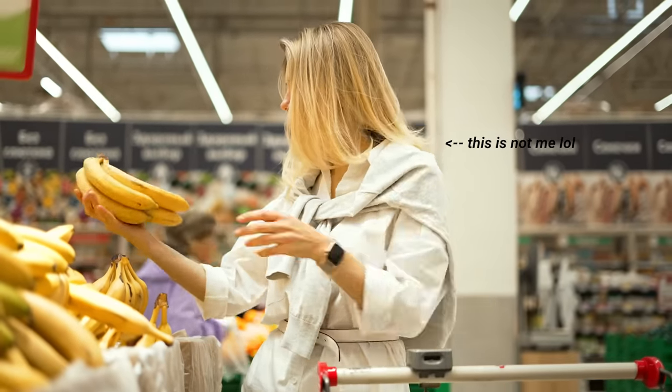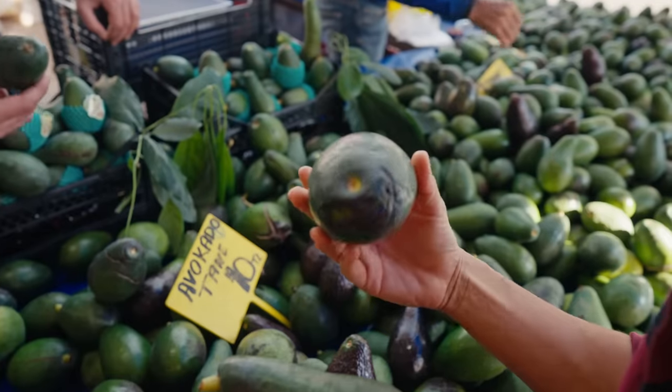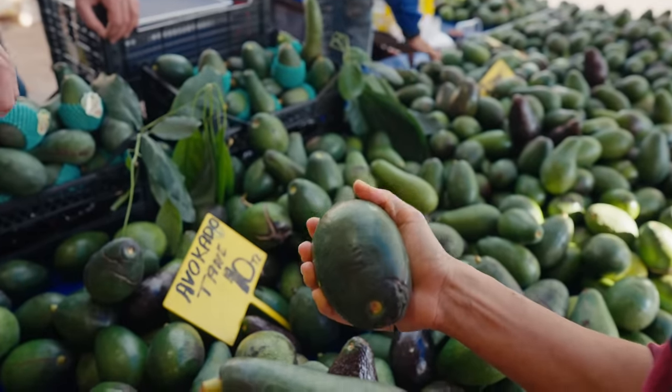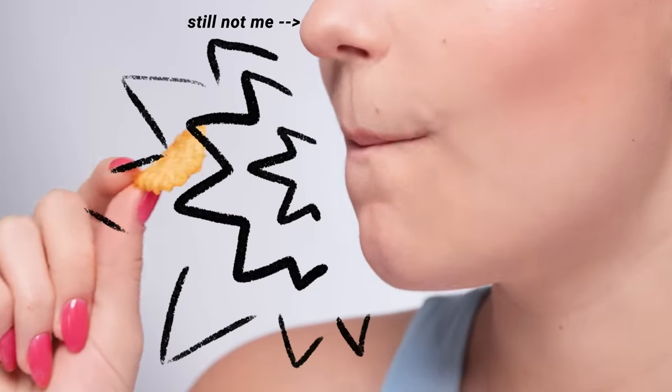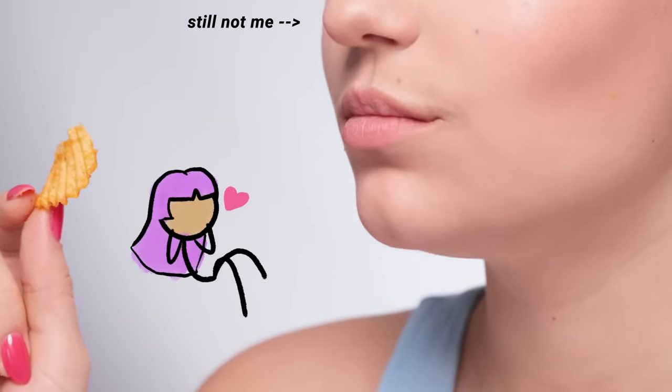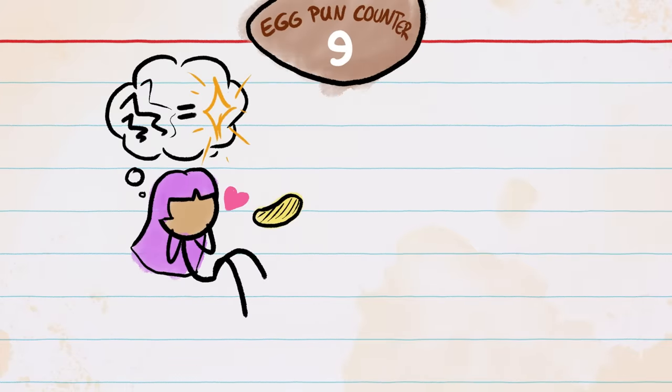I know you've chosen bananas based on how yellow they are, squeezed avocados to pick out the ripest one, sniffed some leftovers to see if they're still fresh, or heard someone crunching chips and just had to have some. These cues all set an egg-spectation of how something's going to taste before you ever put it in your mouth.